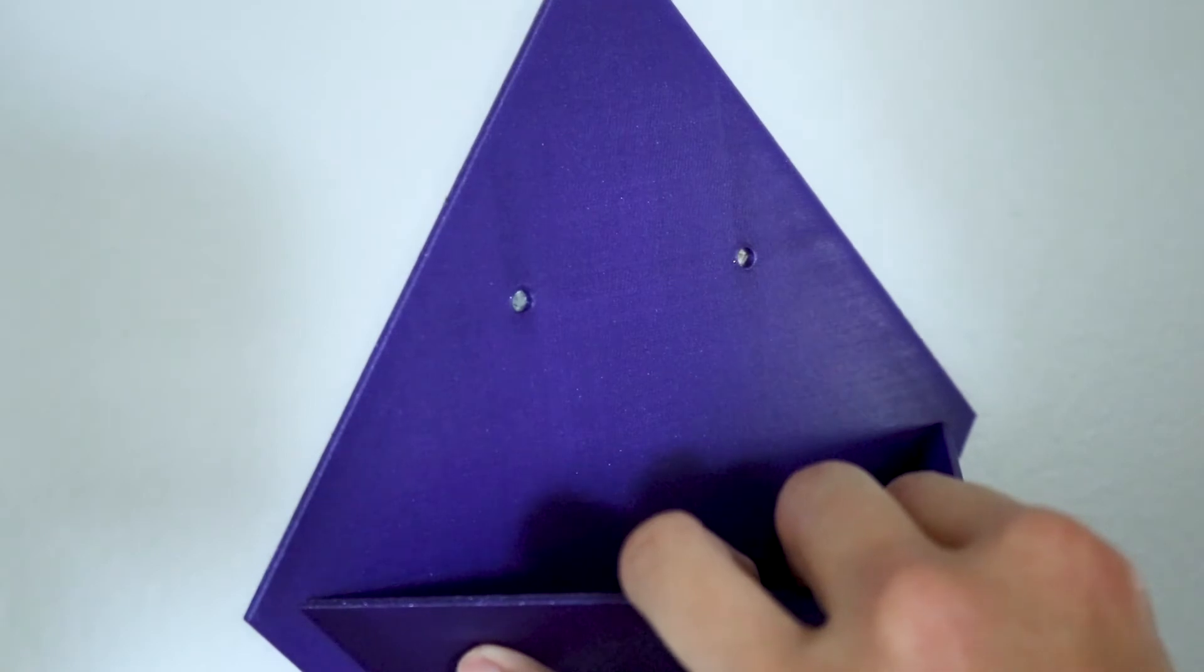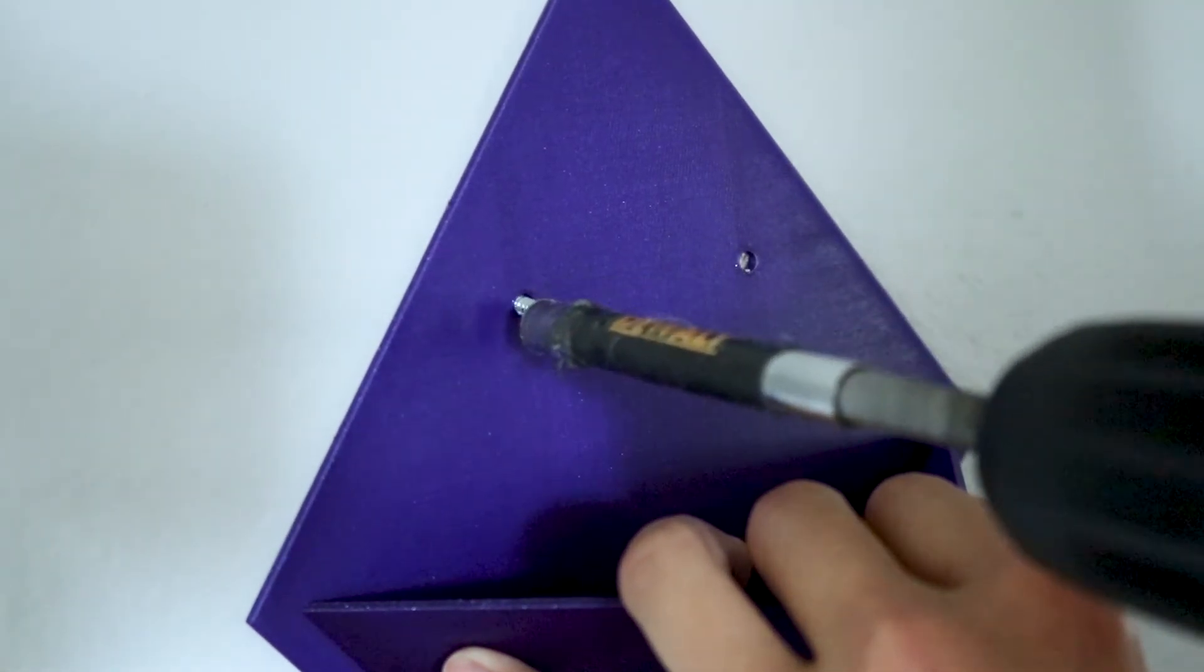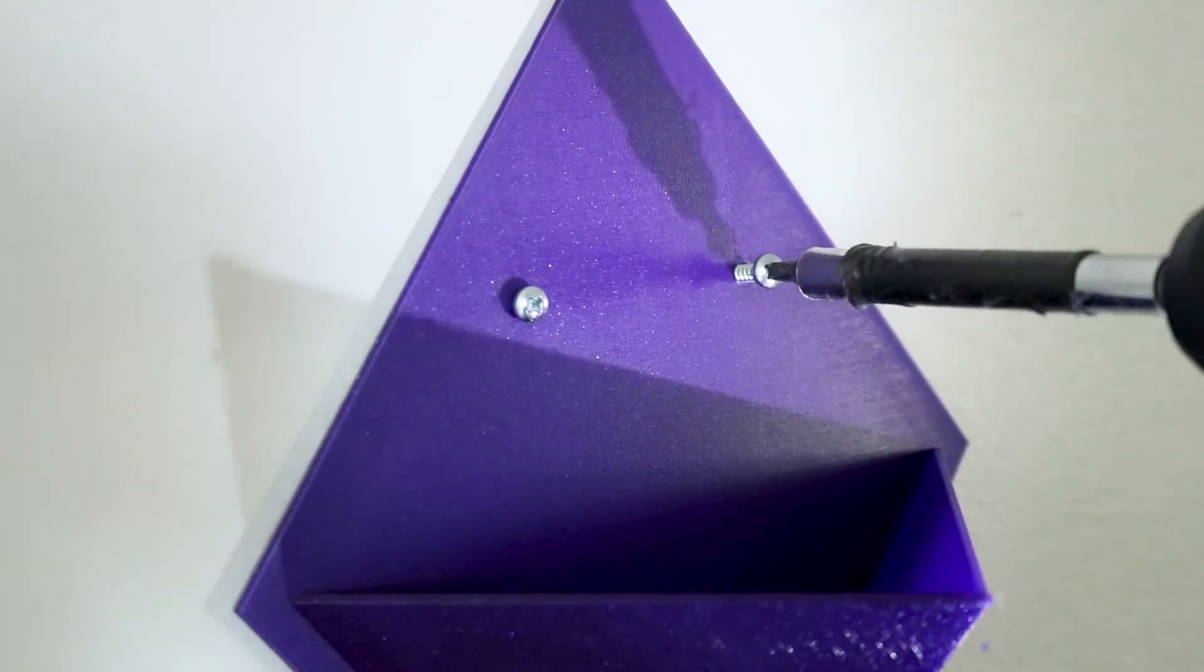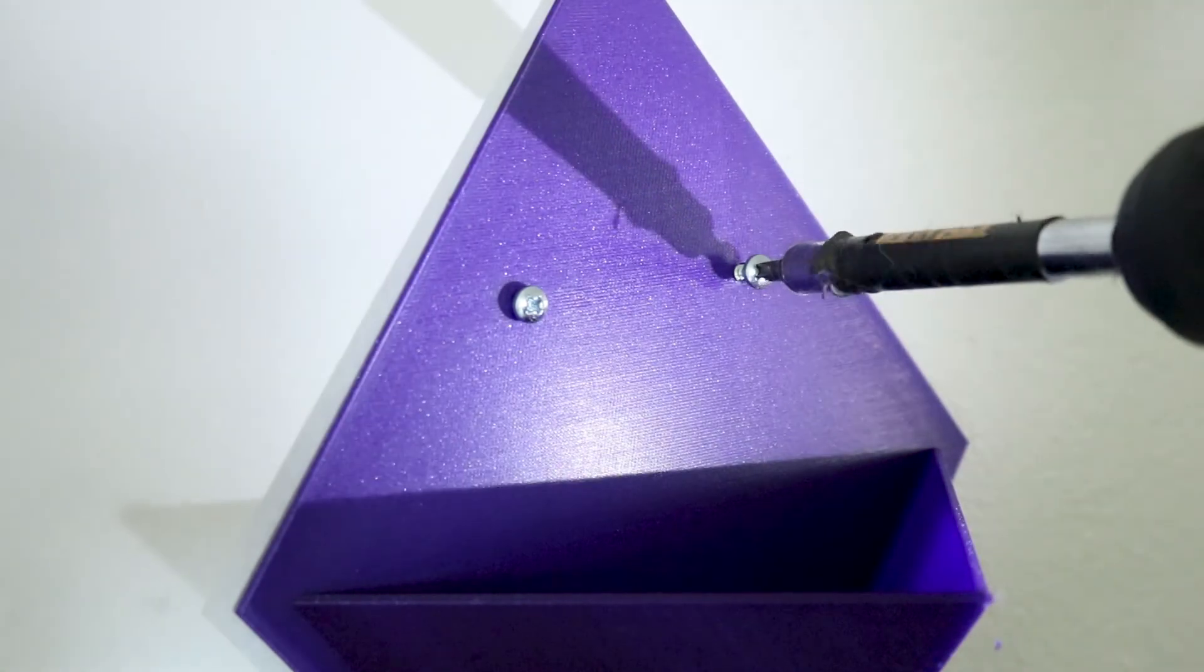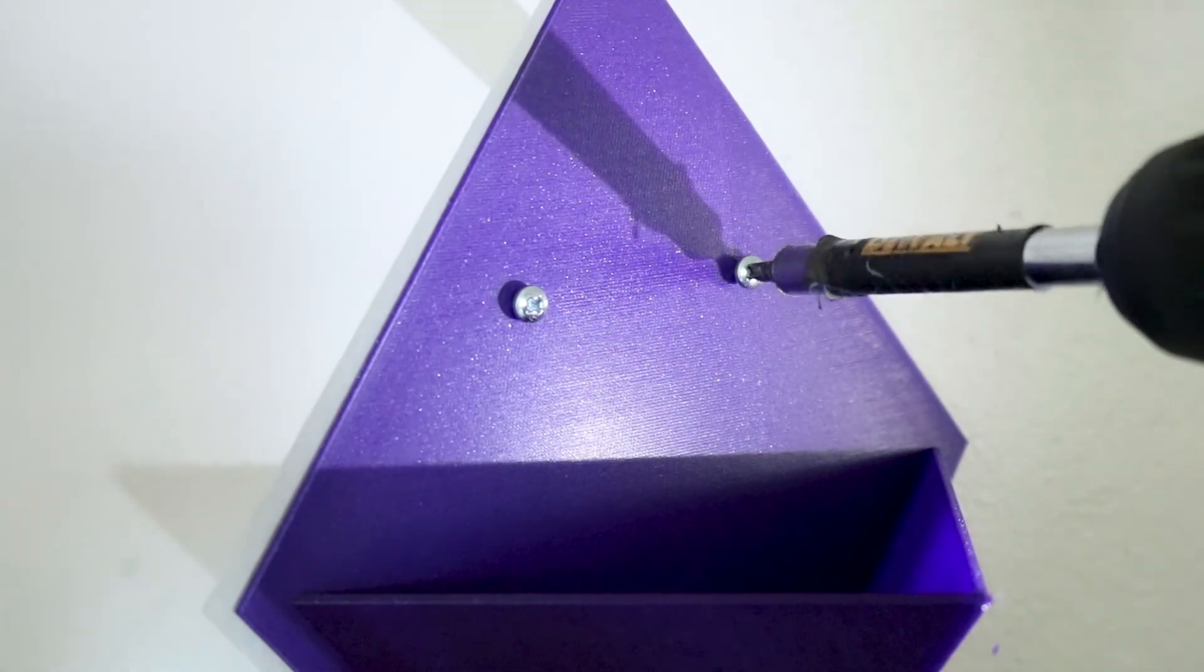Once all the drywall anchors are installed, I hold the wall planter up with one hand and use a drill with the other to install the screws. I repeat this process with the remaining two planters.